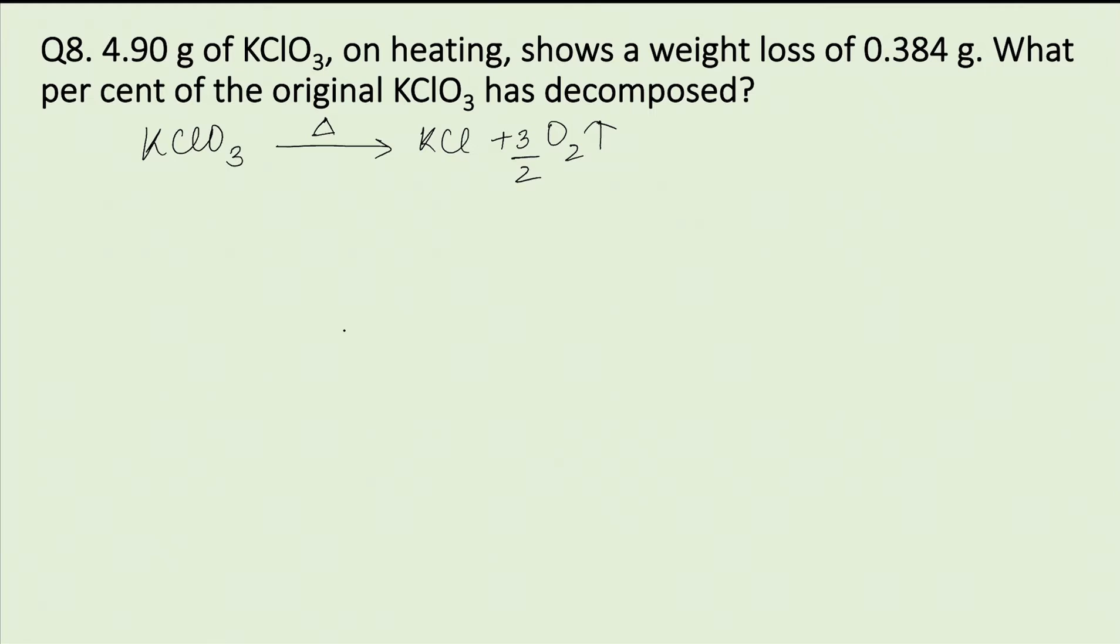The loss in weight is due to the evolution of this oxygen gas. As seen from the chemical equation, 3/2 mols of oxygen is produced from 1 mol of KClO3.